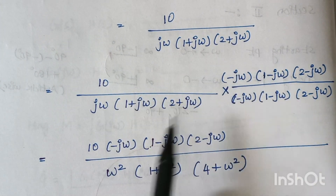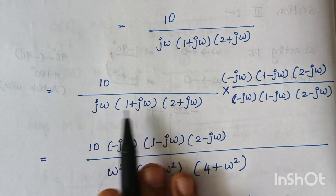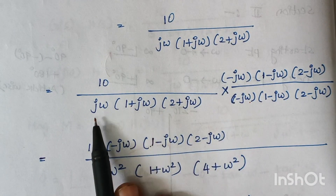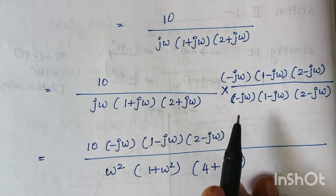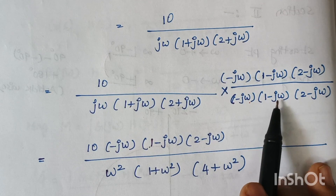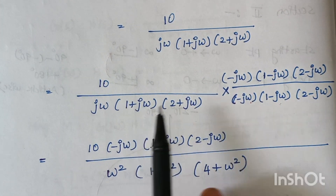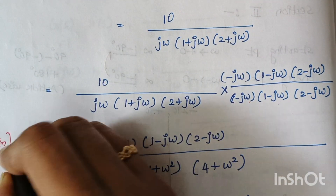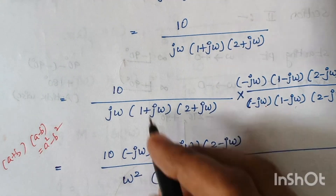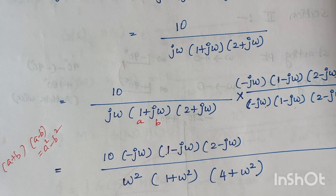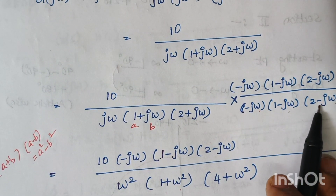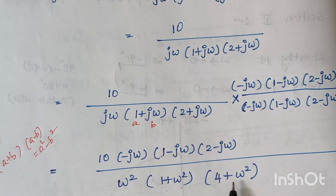Combining the numerator terms and simplifying: omega times omega gives omega squared, and j times minus j gives plus 1, so we get plus omega squared. For the terms one plus j omega and one minus j omega, using the identity (a+b)(a-b) = a² - b², we get one plus omega squared. Similarly, two plus j omega and two minus j omega gives four plus omega squared.